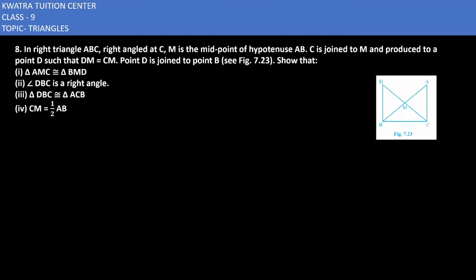In the third part, what we need to prove is that triangle DBC and triangle ACB are congruent. How can we prove they are congruent?